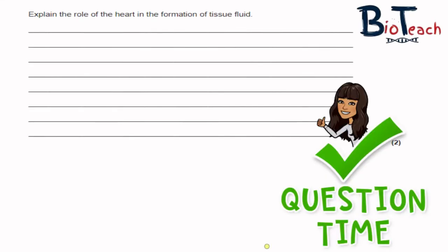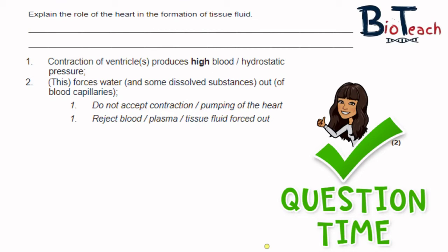Here are some past paper questions. The first question is worth two marks: explain the role of the heart in the formation of tissue fluid. The answer is that contraction of the ventricles produces high hydrostatic pressure, which forces water out of the blood capillary. Note that examiners don't accept just 'contraction or pumping of the heart' — they want you to mention the blood pressure created by the ventricles, specifically the left ventricle. Also note: if you say blood plasma or tissue fluid is forced out you will lose a mark; you must say water is forced out.